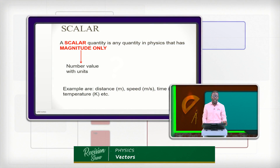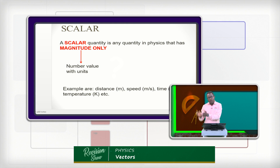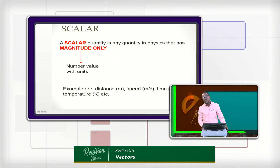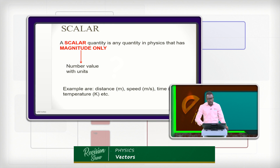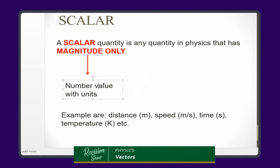Scalars. What are scalars or scalar quantities? It's the same thing. And we met this even in measurement. We said that any quantity that can be quantified is called a physical quantity. The physical quantities, we talked about the fact that they can be grouped into basic and derived. Now if you take all the basic quantities and all the derived quantities, we can also subgroup them under scalars and vectors. Scalars are quantities in physics that have only magnitude. They have only number values with units. They do not have any direction.